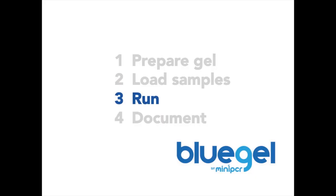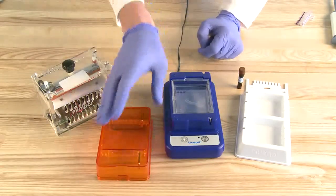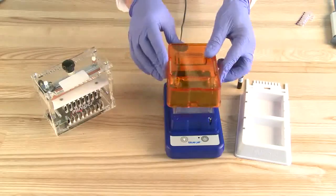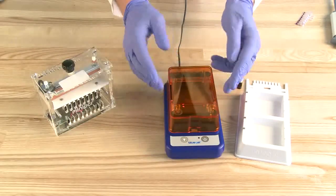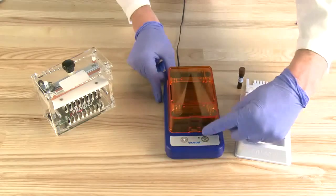Once you have loaded all your samples, place the orange cover over the blue base. The cover will only fit so that the electrodes are in the correct position. Start the electrophoresis process by pressing the power button. The indicator light should turn on.